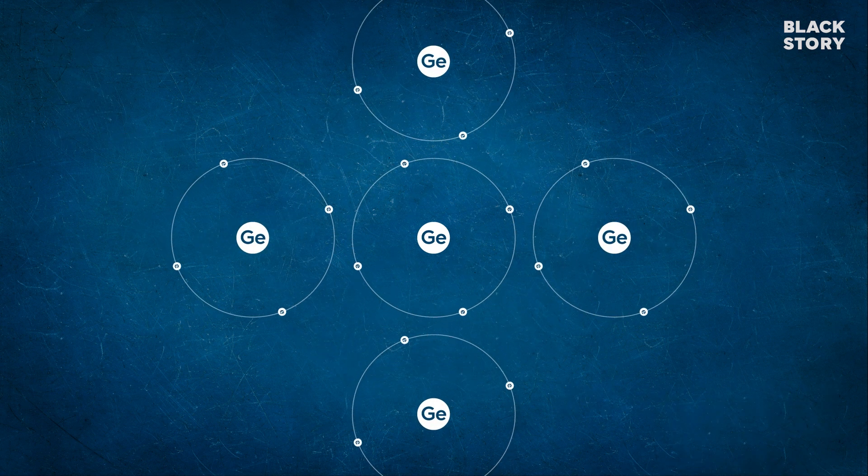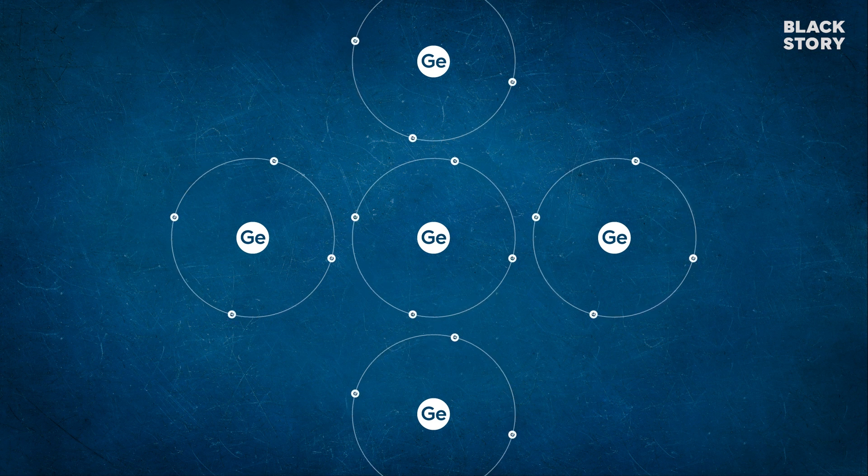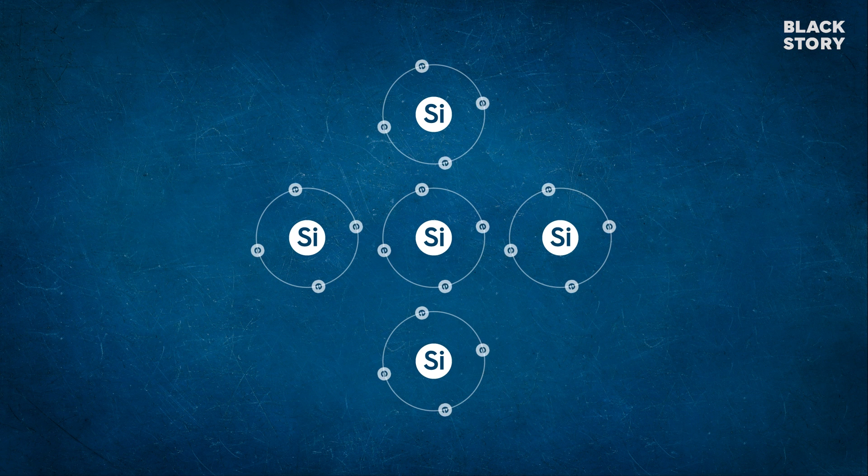In crystalline structure, each atom shares its outer orbit electrons with nearby atoms. This is called covalent bond. Only these electrons in the outermost shells are responsible for conductivity, so let's concentrate on them alone.